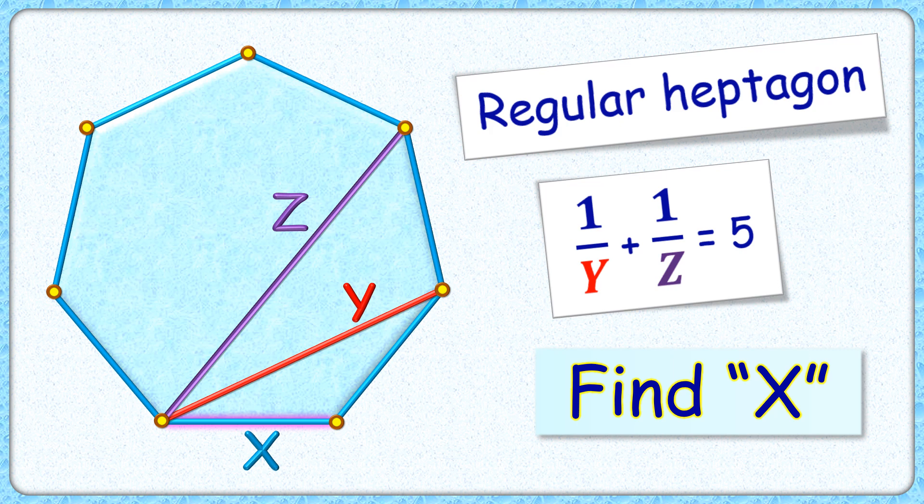I love geometry! This question at first looks way too difficult to solve, but it has such an easy solution. We have a regular heptagon where the side length is x centimeters. The length of the red and purple diagonals is y and z centimeters. Given is 1/y + 1/z = 5, and using this limited data we have to find the value of x.